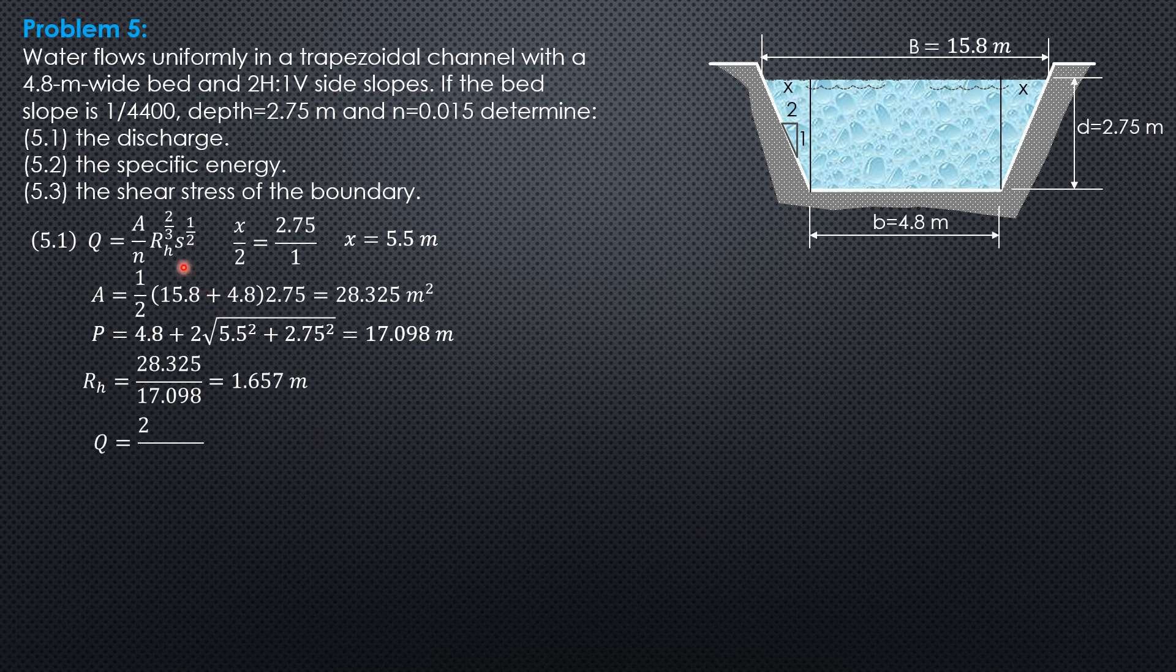Substitute into the formula. Q equals area 28.325 over n 0.015 times the hydraulic radius 1.657 to the 2 thirds, then slope 1 over 4,400 to the 1 half. So the discharge can now be computed. It is 39.86 cubic meters per second.